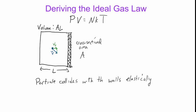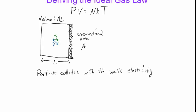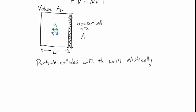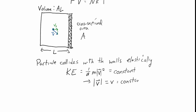That is, no energy is lost when the particle collides with the wall. If we ignore gravity, that means the kinetic energy of this particle, one-half mv squared, is a constant. Since the mass of the particle is not changing, that means the magnitude of the velocity — the speed of the particle — is constant all the time. The speed of this particle never changes as it moves around.